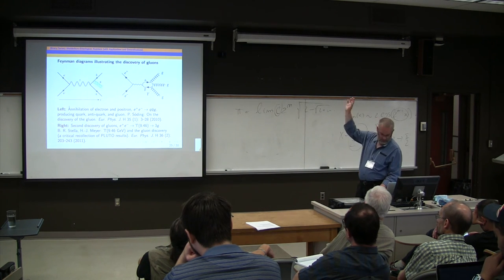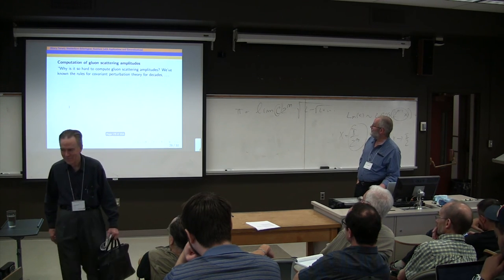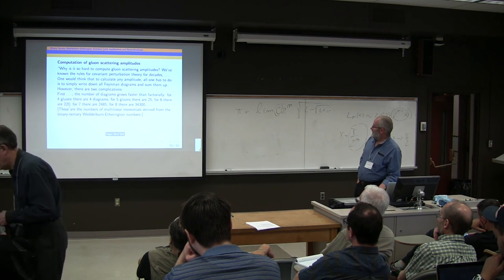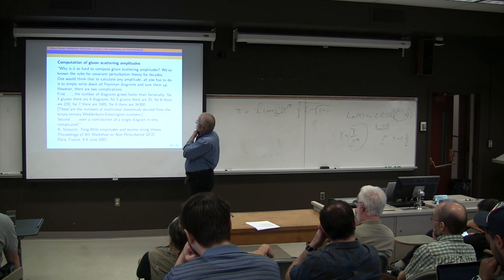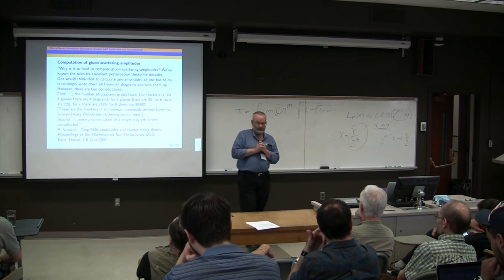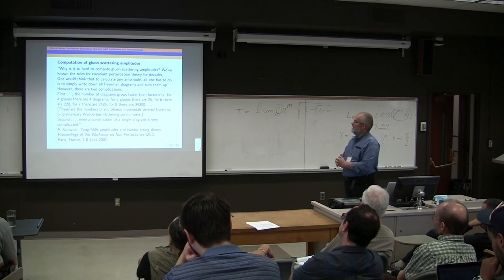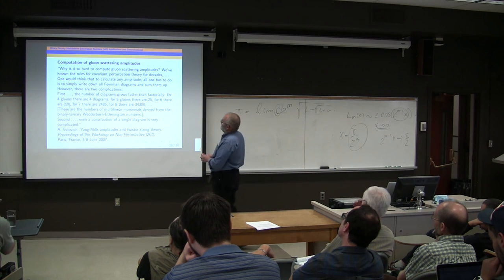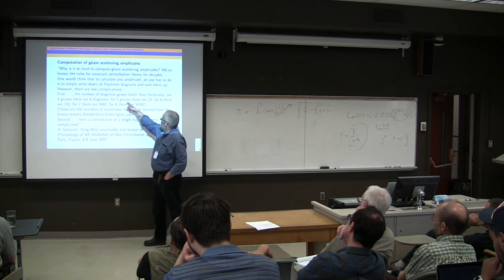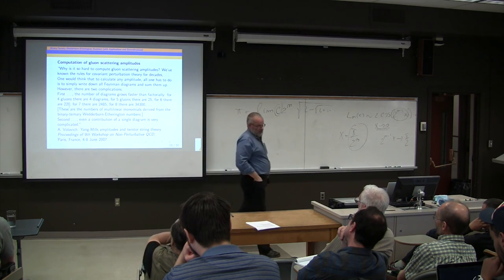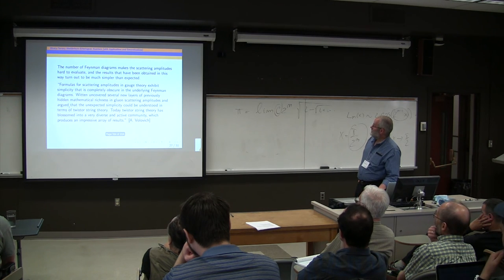Well, I found this nice article by Anastasia Volovich, Yang-Mills amplitudes and twistor string theory. It's very hard to compute these gluon scattering amplitudes. The physicists want to work out. And the reason is that there are so many Feynman diagrams. And each Feynman diagram gives a complicated contribution. The number of Feynman diagrams is exactly these numbers in binary, ternary, Wedderburn-Etherington numbers. And, yeah, there's a famous paper by Ed Witten which attempts to explain in terms of string theory why the results you get from these complicated calculations are much simpler than you would expect.